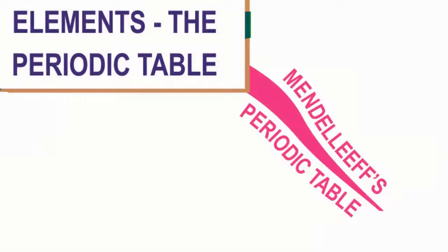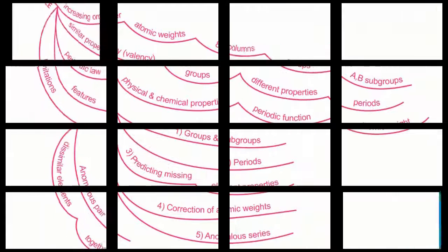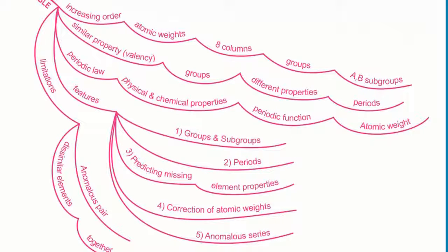Our third branch is Mendeleev's periodic table. The keywords used in this branch are increasing order, atomic weights, eight columns, groups, A, B, subgroups,